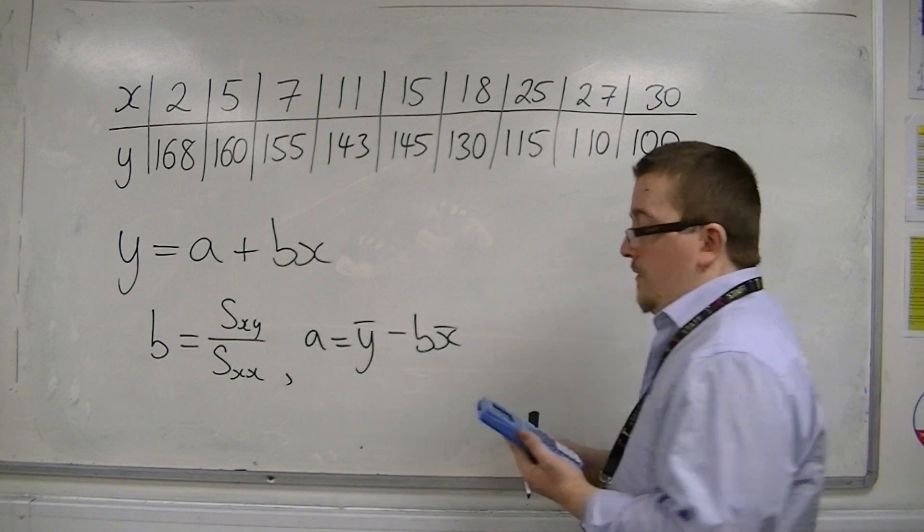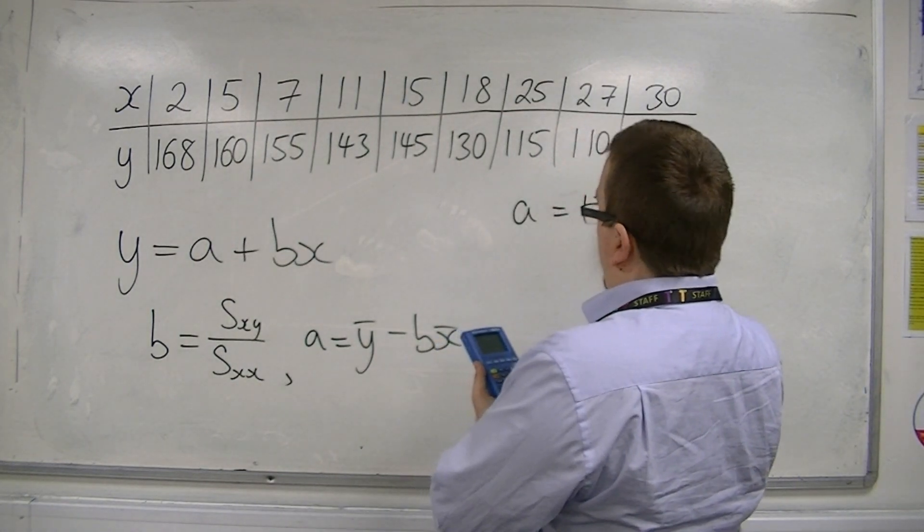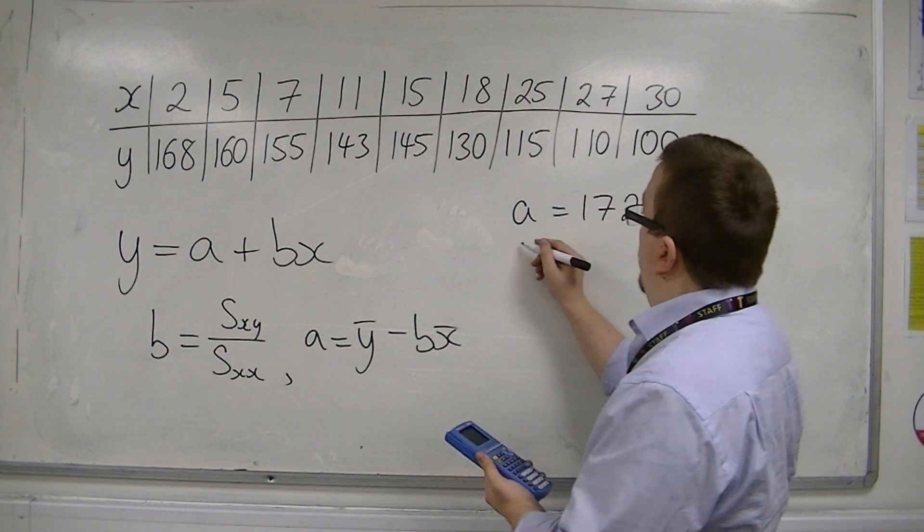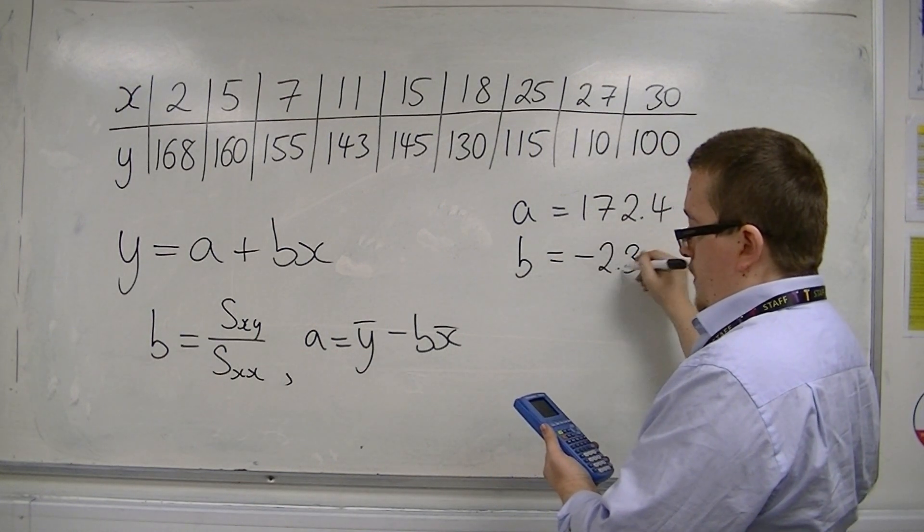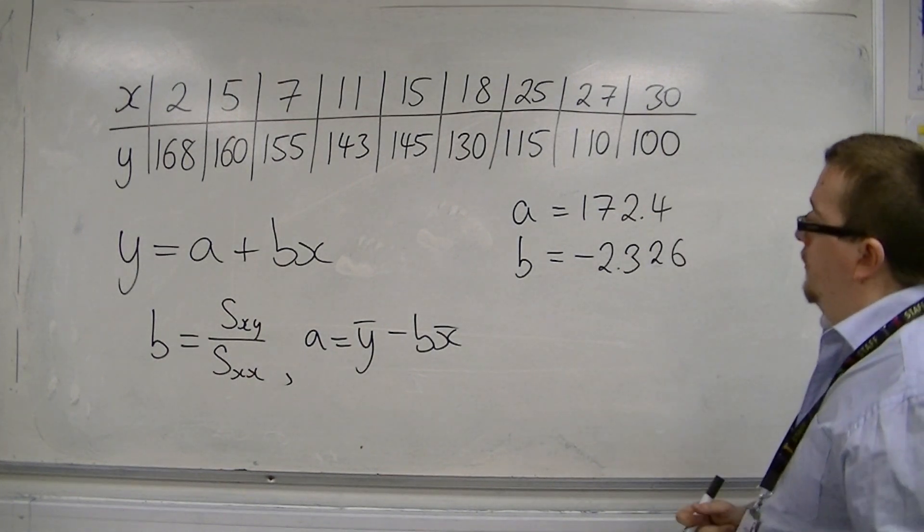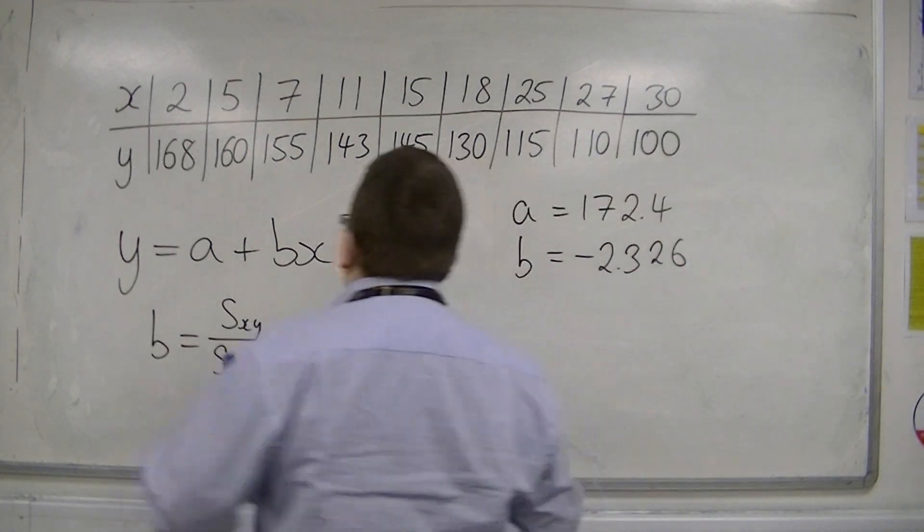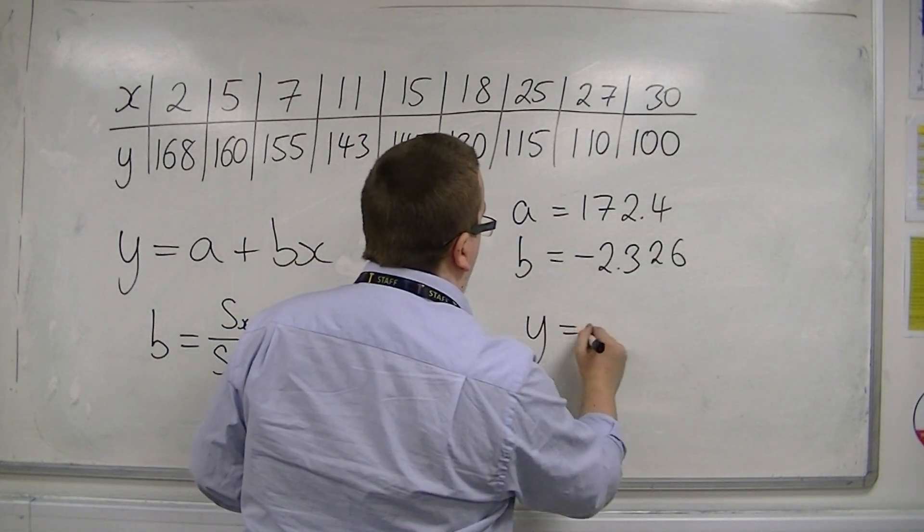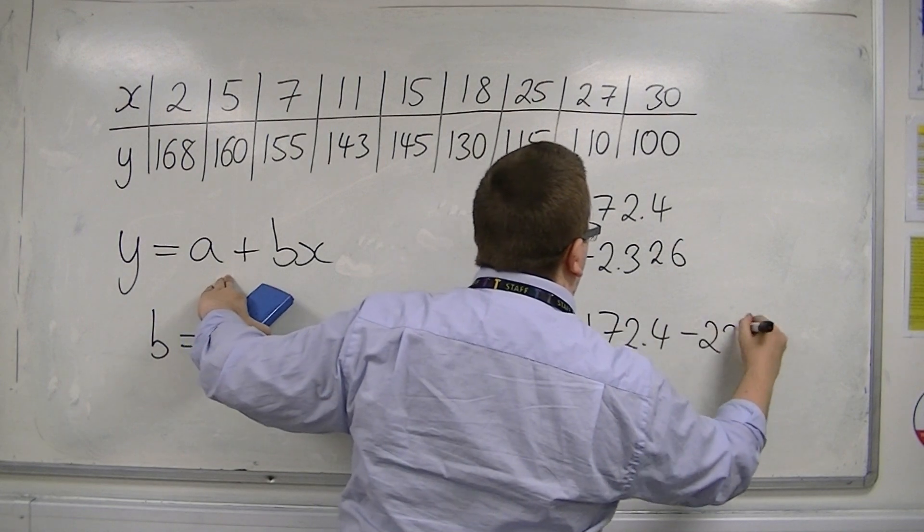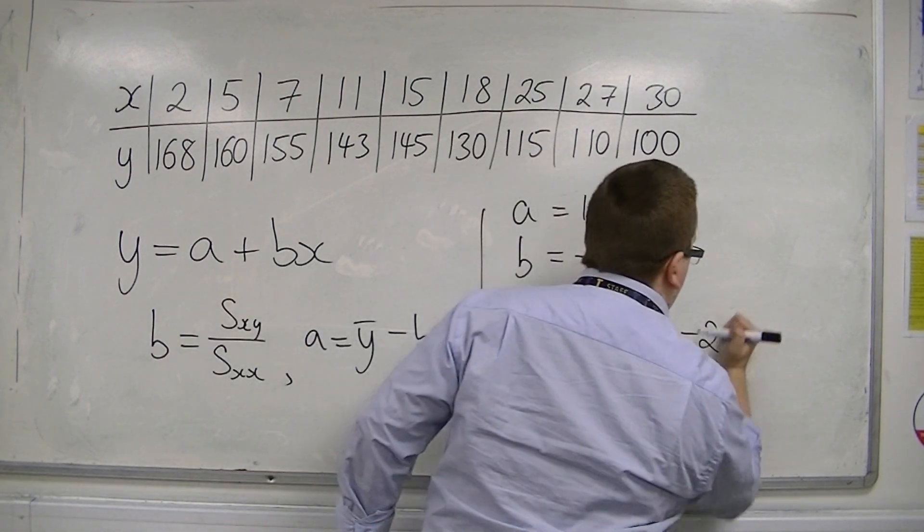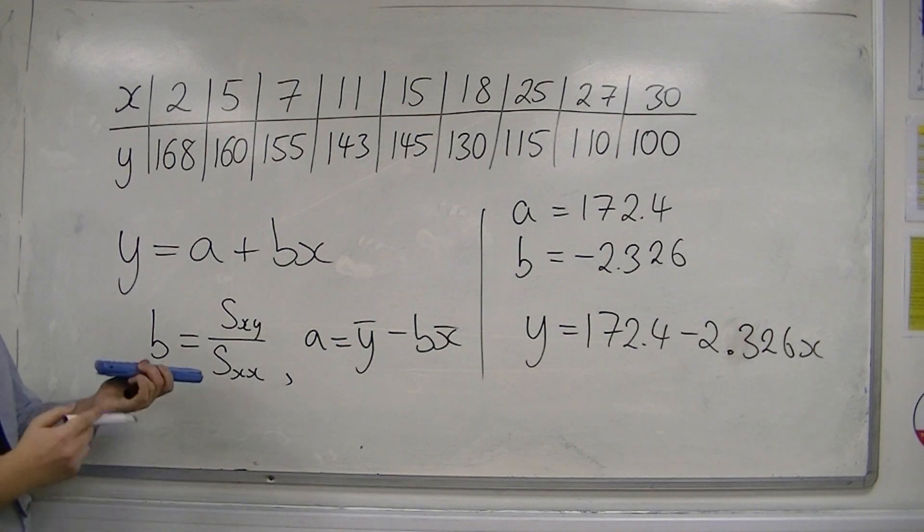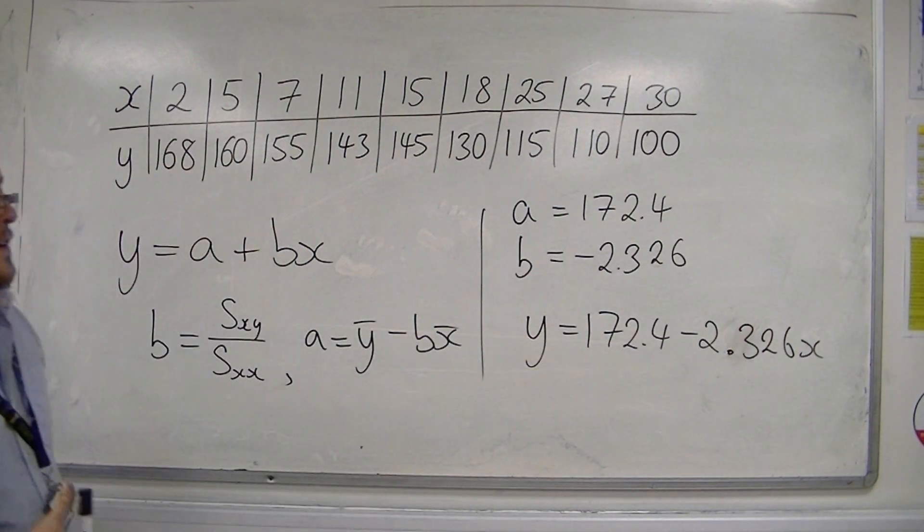So, on the calculator, we found that a is equal to 172.4, and it continues, and we found that b is equal to minus 2.326. I'm going to go to four significant figures for both of these. What that means is that the equation of the line is 172.4 take away 2.326x, where both of them are given to four decimal places. That would be the equation of the least squares regression line that I need.